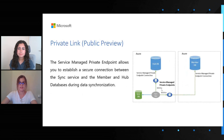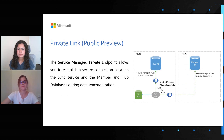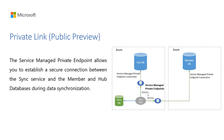Another security measure recently implemented in SQL Data Sync — still in public preview — is private link. This allows you to establish a secure connection between the Sync service and your member and hub databases during the data synchronization process. However, it's worth noting that if you want to use private link, your members have to be on Azure SQL DB.